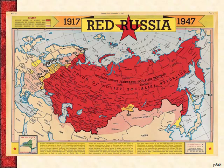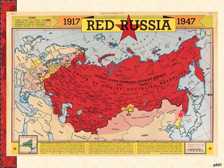This map from your book shows the Soviet Union's areas of influence in Eastern Europe, including East Germany, and most importantly for us — North Korea.